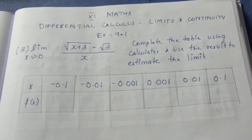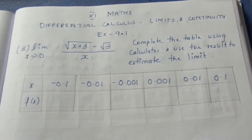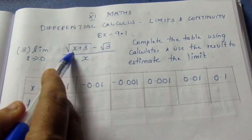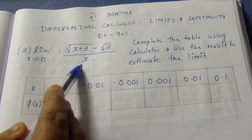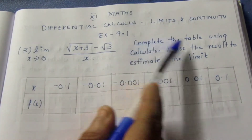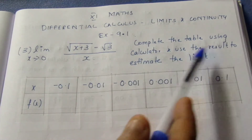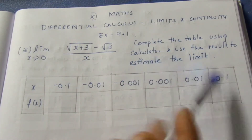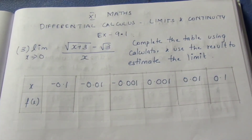Let's see the question. Limit x tends to 0, root of (x plus 3) minus root 3, divided by x. Complete the table using the calculator and use the result to estimate the limit. So, we will complete the table and find the limit.